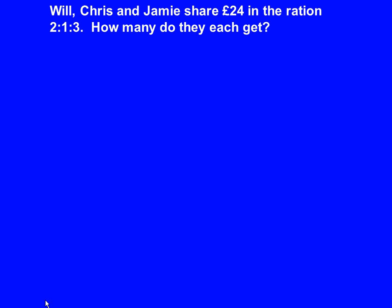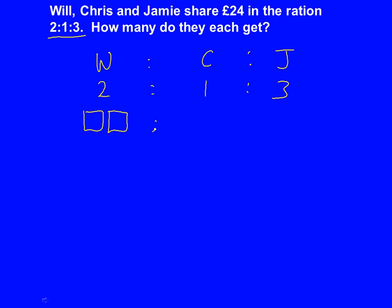Next question: Will, Chris and Jamie share 24 pounds in the ratio 2 to 1 to 3. How many do they each get? Exactly the same method except there are 3 people this time. So it's W, C and J, and the ratio is 2 to 1 to 3. Now we draw the boxes: Will has 2 boxes, Chris has 1 box, and Jamie has 3 boxes.